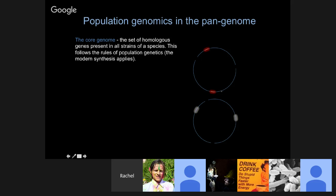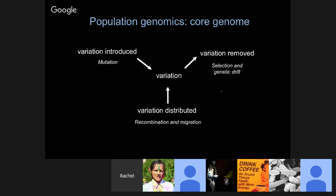Everyone in the species has those genes — that's called the core genome. It's what makes E. coli E. coli, or Sulfolobus Sulfolobus. We know from studying natural variation and population genomics in charismatic macrofauna like yeast, plants, and animals how this natural variation is shaped. Variation is introduced by mutation, or moved around by recombination and migration, and removed by selection or genetic drift.